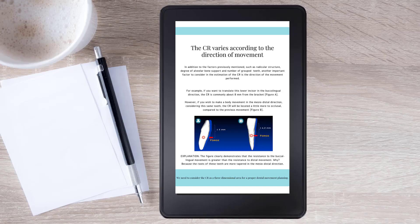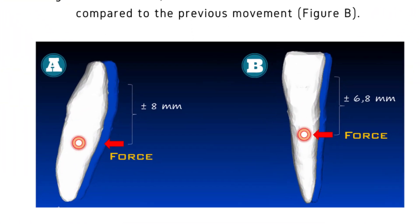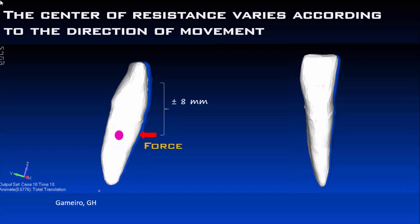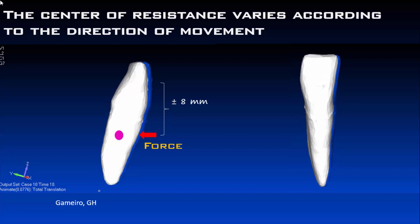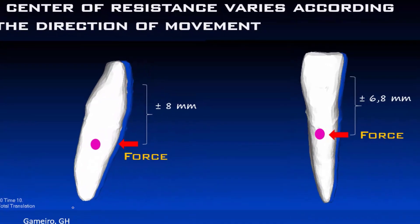The CR also varies according to the direction of movement. In addition to radicular structure, degree of alveolar bone support, and number of grouped teeth, another important factor is the direction of the movement performed. For example, if you want to translate a lower incisor in the buccal-lingual direction, the CR is commonly about 8 mm from the bracket. However, if you wish to make a body movement in the mesial-distal direction on the same tooth, the CR will be located a little more toward occlusion. The explanation is that the resistance to buccal-lingual movement is greater than the resistance to distal movement.